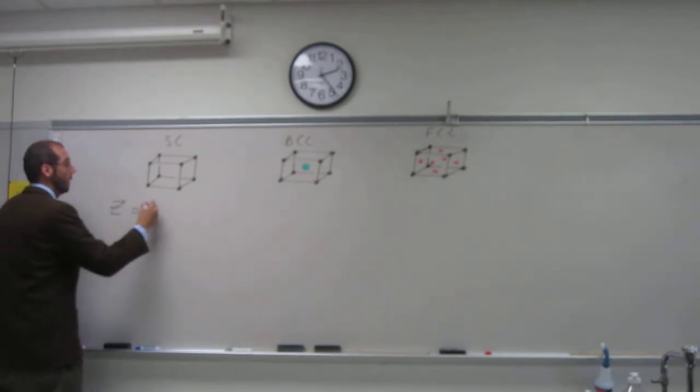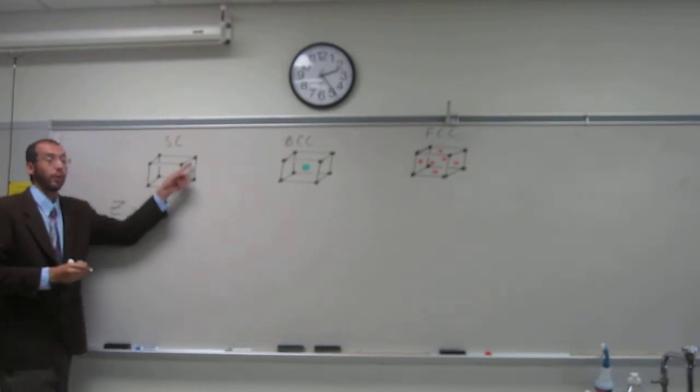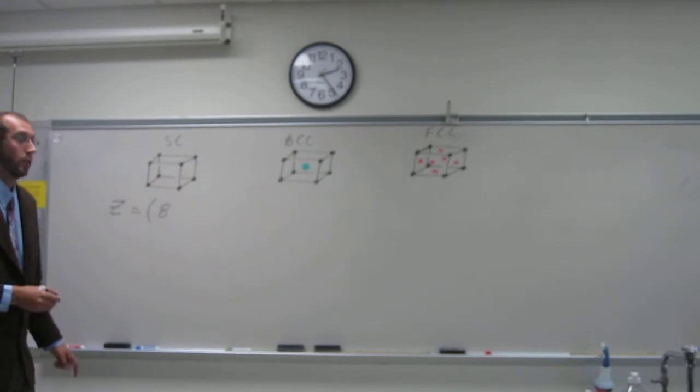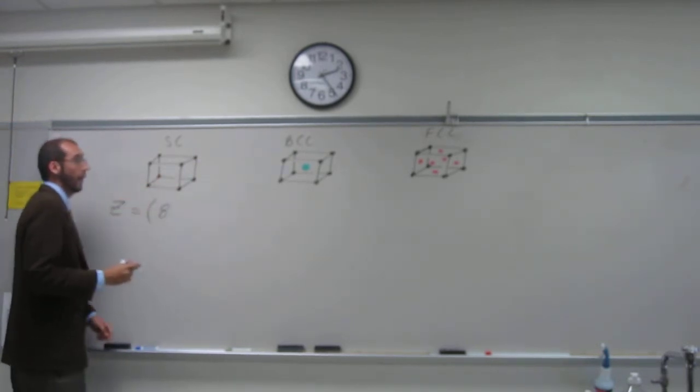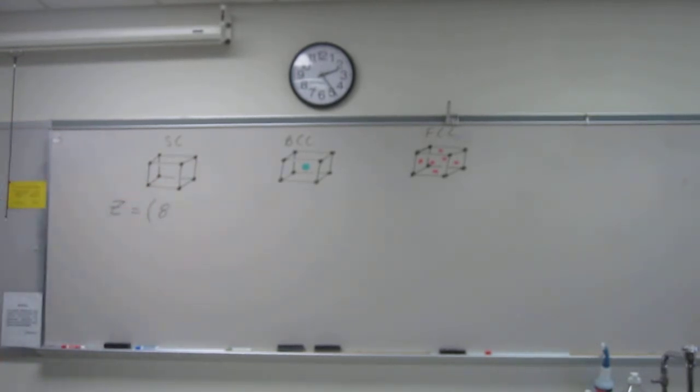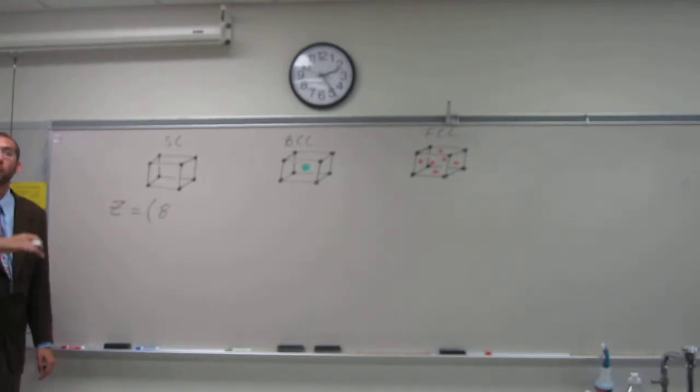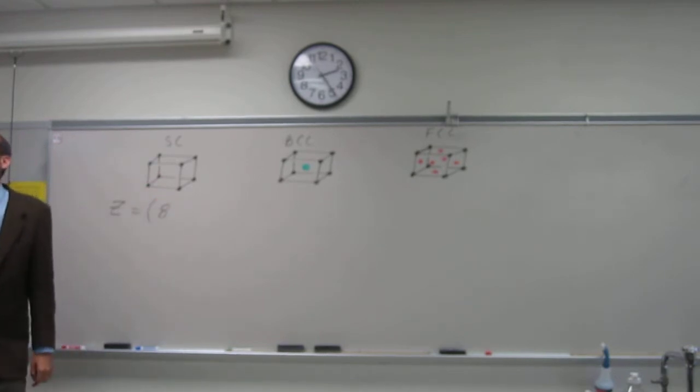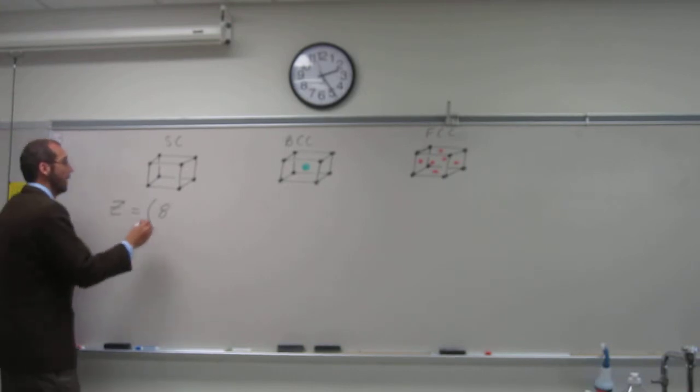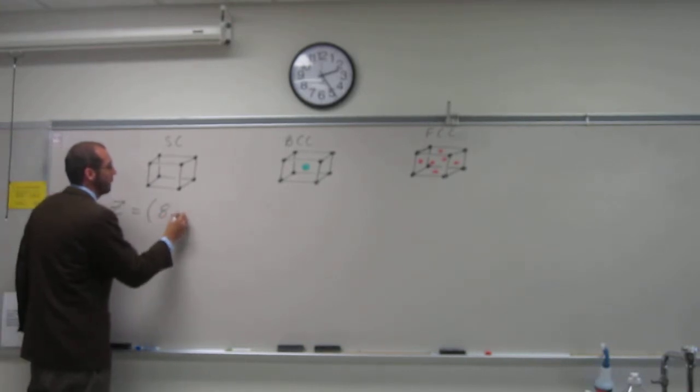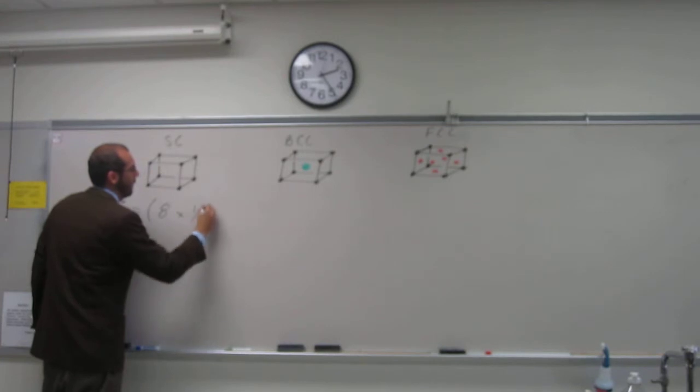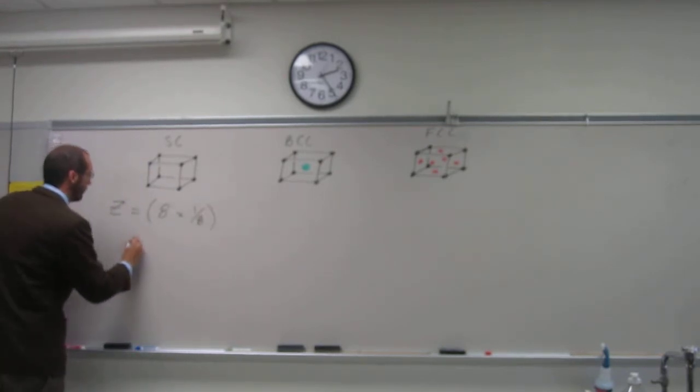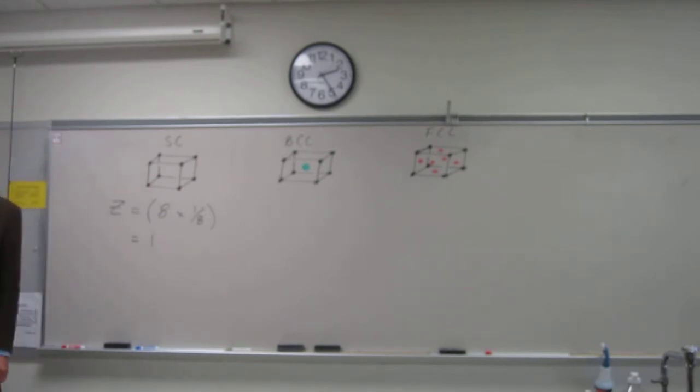So Z is going to be eight atoms counted from the corners. But we have to ask ourselves: how much of that actual atom is within the unit cell? If you think about it, you'll find that only one-eighth of each corner atom is actually inside. So to find the number of lattice points, we calculate eight times one-eighth, and that equals one.